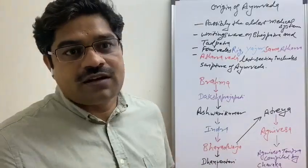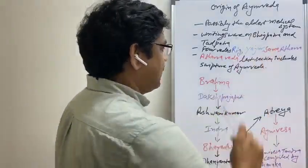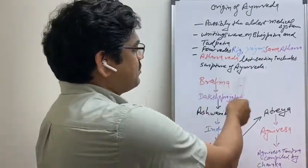There were four Vedas written by Lord Brahma: Rig Veda, Yajur Veda, Sama Veda, and Atharva Veda. The last section of Atharva Veda is dedicated to the scriptures of Ayurveda.